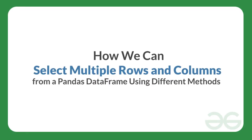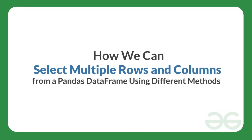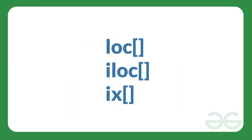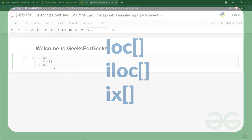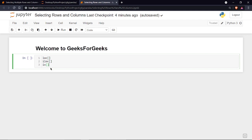Hello everyone, welcome to GeeksForGeeks. In this video we are going to learn how we can select multiple rows and columns using different methods. To do this task we have the loc method and the iloc method. We also used to have the ix method, but after version 0.20 of pandas it was deprecated and is no longer supported.